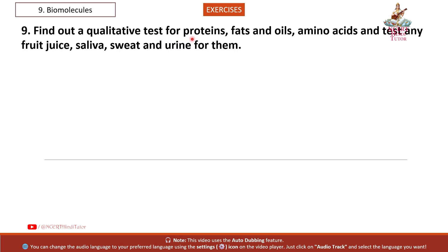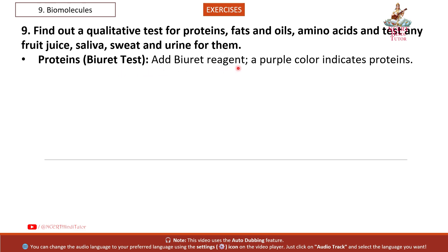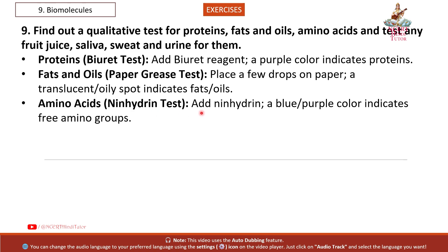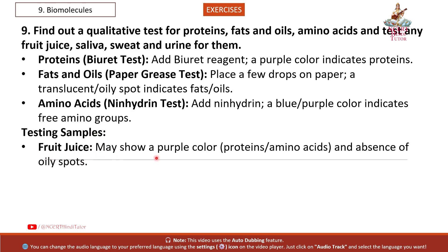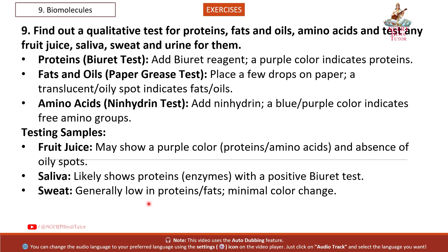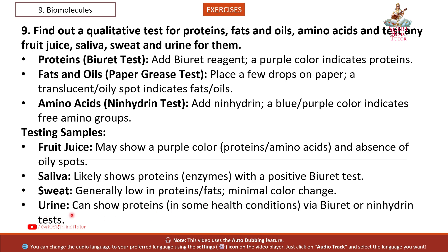Question 9: Find out a qualitative test for proteins, fats and oils, and amino acids, and test fruit juice, saliva, sweat, and urine for them. Answer. Proteins — Biuret test: add Biuret reagent; a purple color indicates proteins. Fats and oils — paper grease test: place a few drops on paper; a translucent oily spot indicates fats/oils. Amino acids — ninhydrin test: add ninhydrin; a blue-purple color indicates free amino groups. Testing samples: fruit juice may show purple color (proteins/amino acids) and absence of oily spots. Saliva likely shows proteins/enzymes with a positive Biuret test. Sweat is generally low in proteins and fats with minimal color change. Urine can show proteins in some health conditions via Biuret or ninhydrin test.